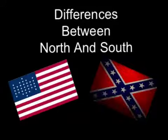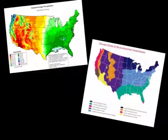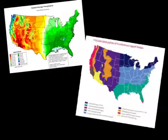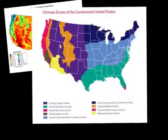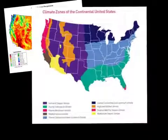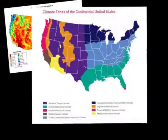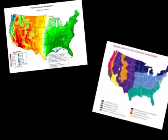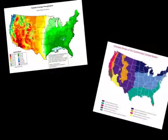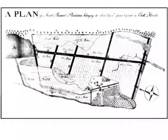Differences between North and South. The North and South have major geographical differences. The North, as shown in this picture, has warm summers and cool winters. The South has hot summers and warm winters.